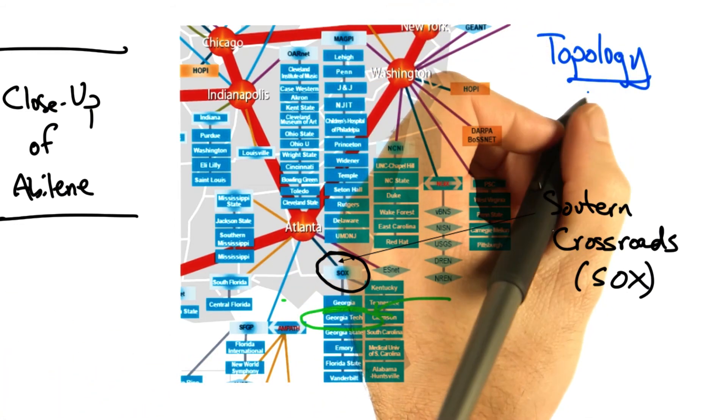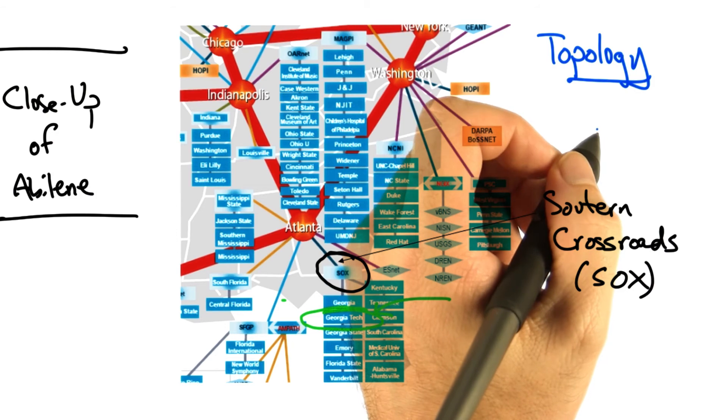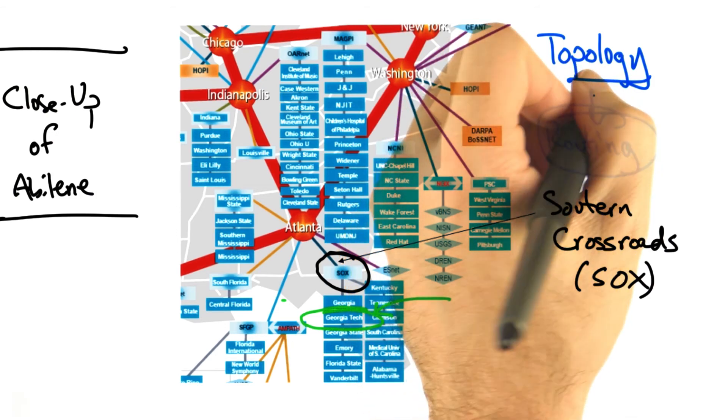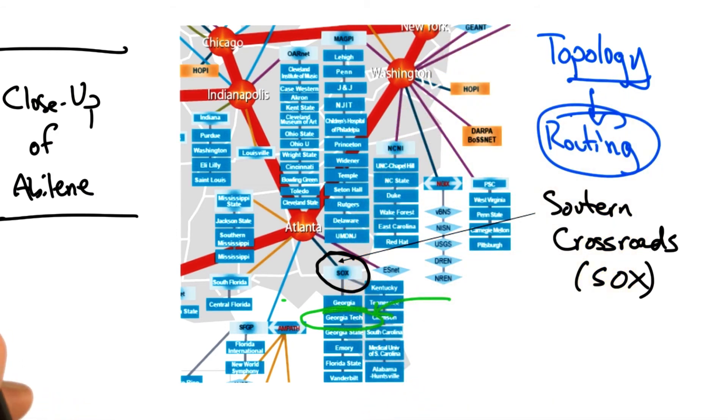Now thus far, we've just talked about the topology of an autonomous system, which essentially defines the graph. The next step is to compute paths over that topology, a process called routing. Routing is the process by which nodes discover where to forward traffic so that it reaches a certain node.